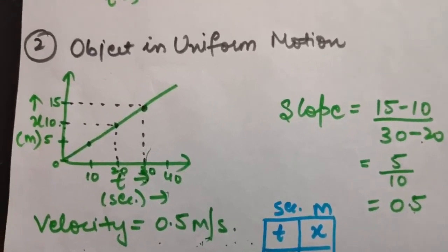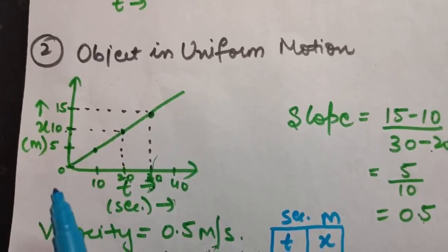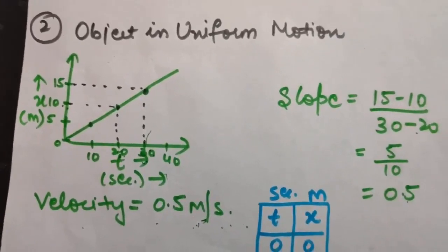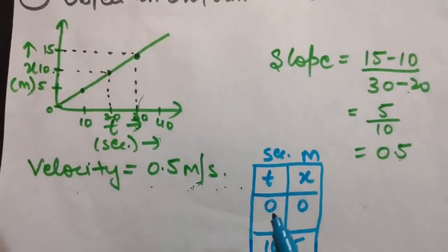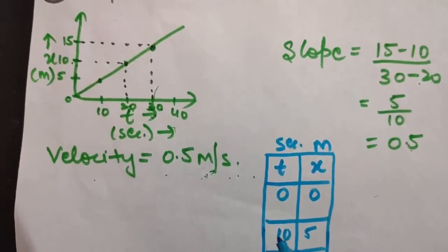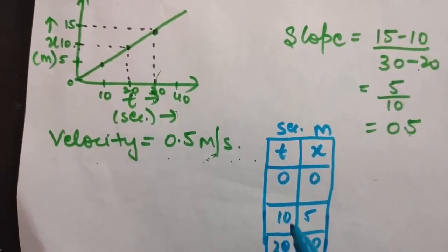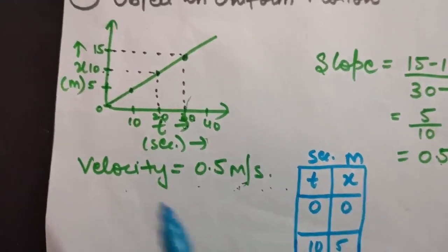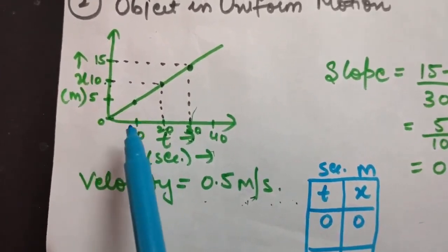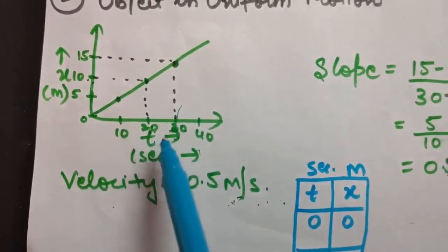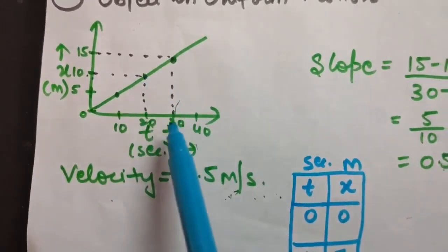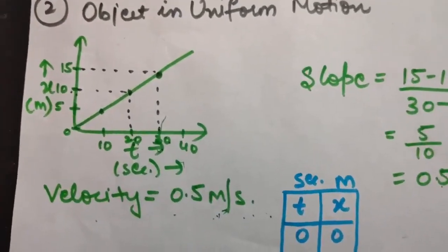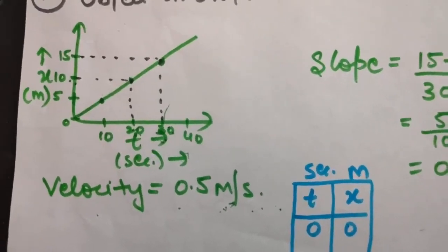For an object in uniform motion, equal displacement is covered in each and every equal interval of time. For example, at time zero distance is zero, at 10 seconds it is 5 meters, at 20 seconds it is 10 meters, at 30 seconds it is 15 meters. Joining all these points gives a straight line - the position-time graph for uniform motion is a straight line.